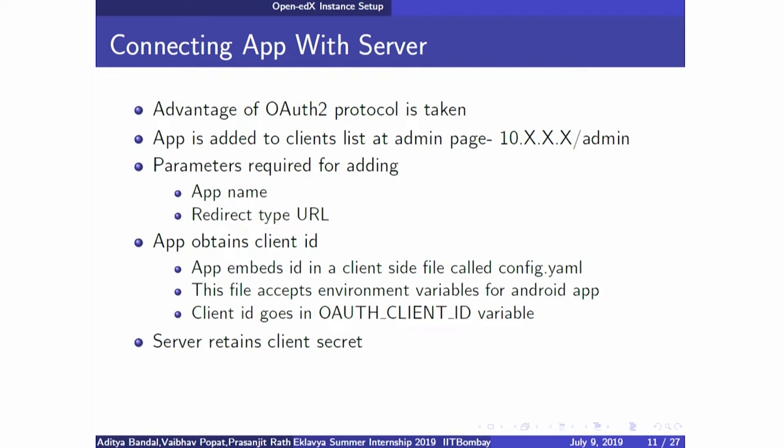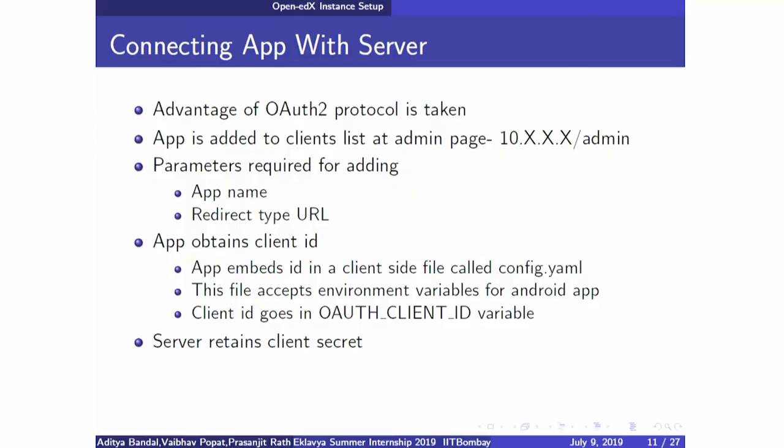After setting up the server, the main task was to connect the app with the server. This can be done by logging into the Open edX server through admin and creating a client, by giving parameters such as app name and redirect URL provided by Open edX. While creating the client, a client ID and client secret are generated. The client secret is stored on the server, and the client ID must be added into the Android app's config.yml file.